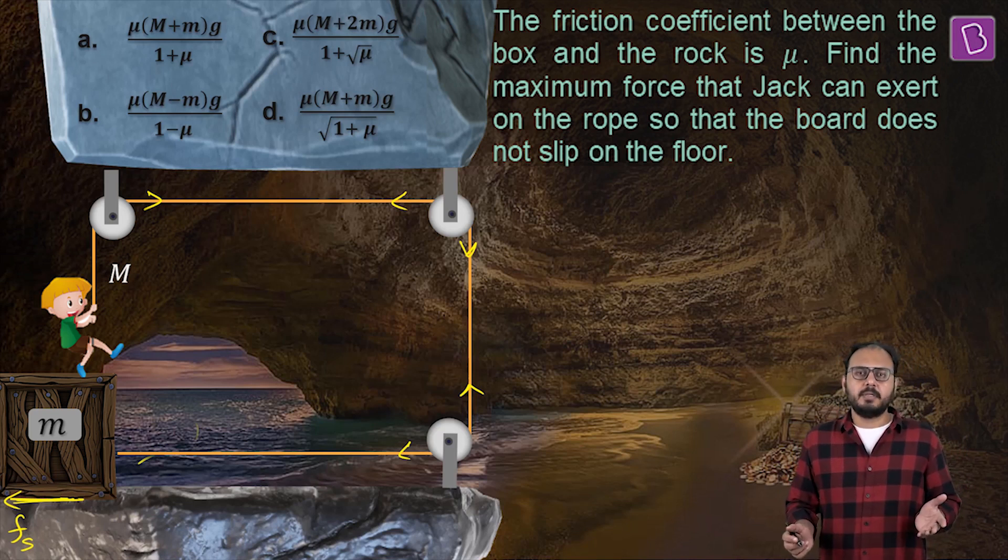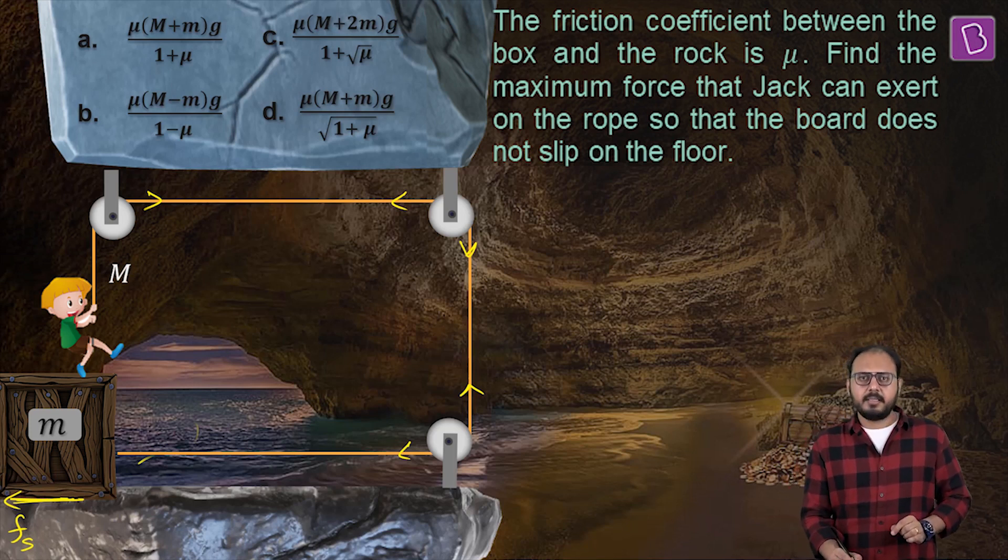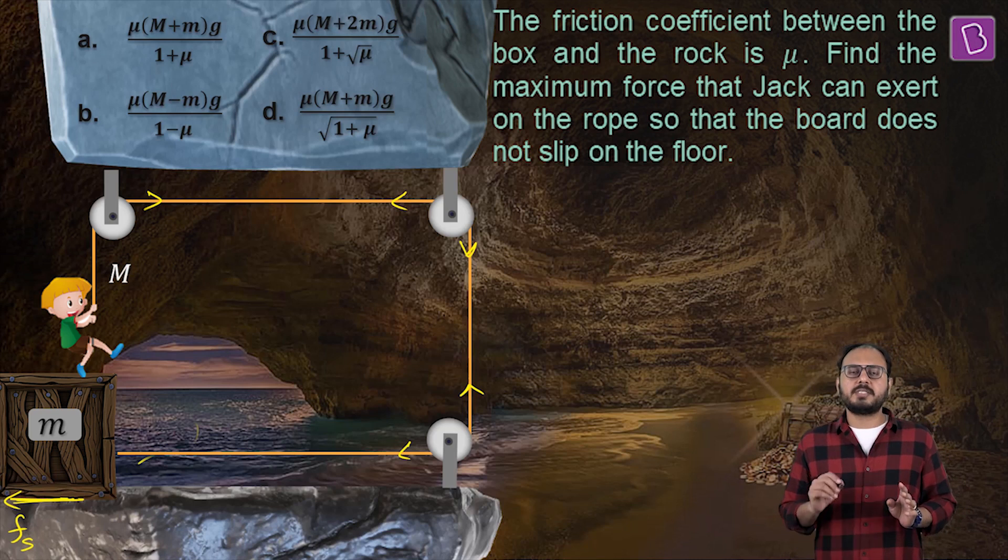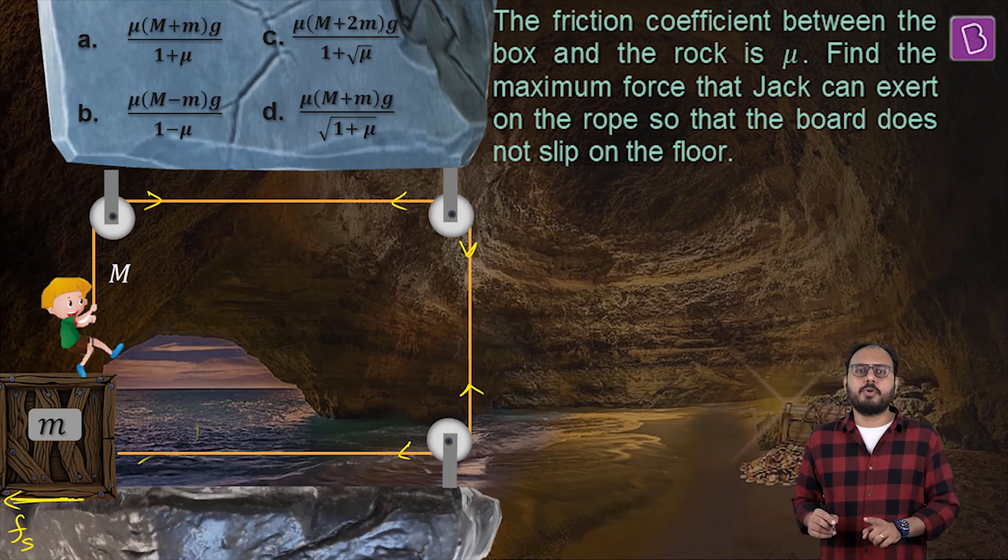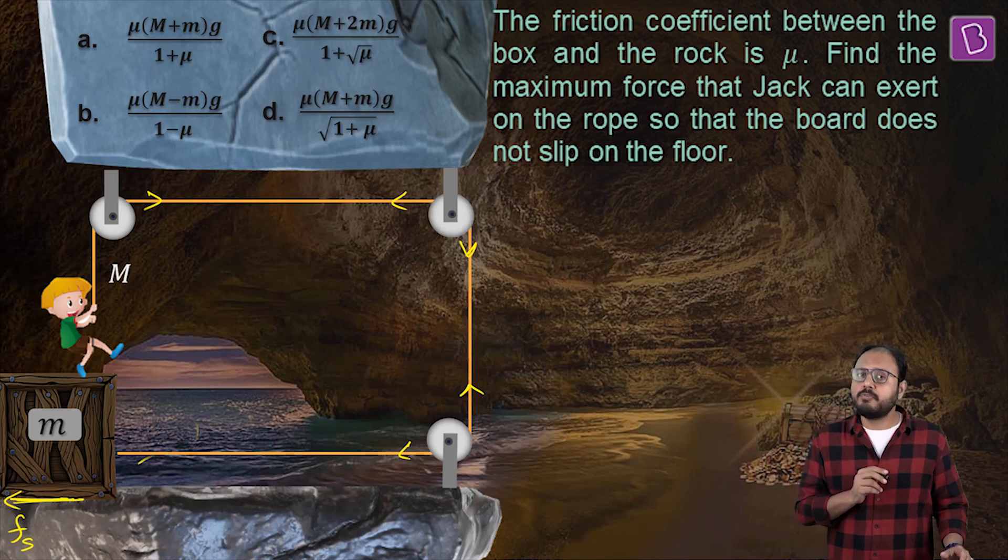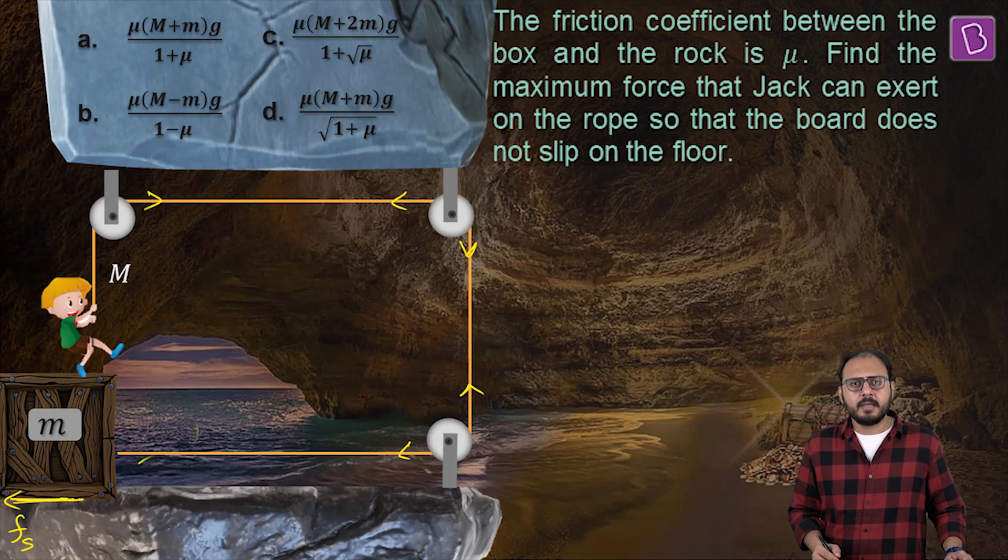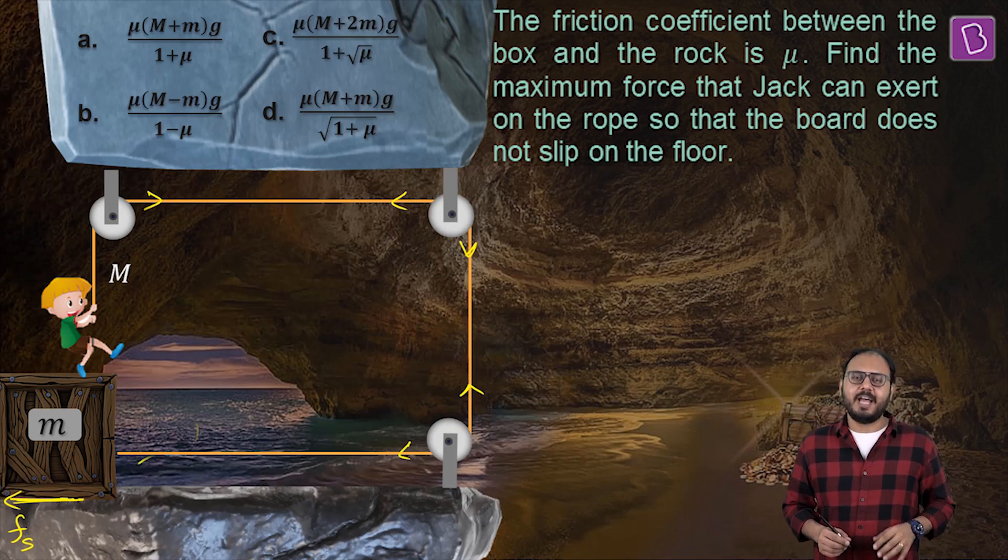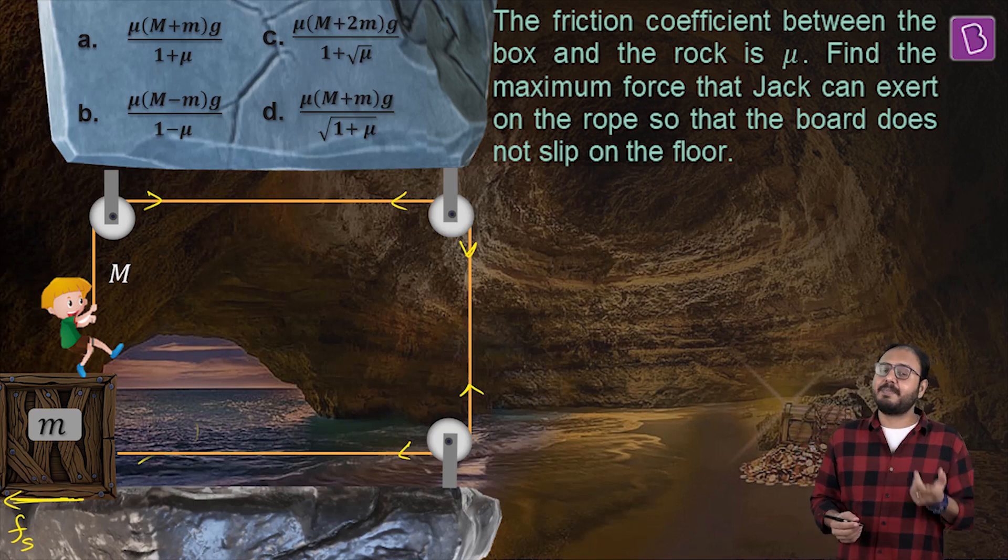So fairly simple. Because of Jack's effort, ultimately the box gets pulled towards right. If Jack makes more effort, the box gets pulled more. And as a result, the friction needs to increase itself so that the box does not move. But increase in friction has a limit. Friction cannot go endlessly up. It can go up to a limiting value, and that limiting value is FS max.